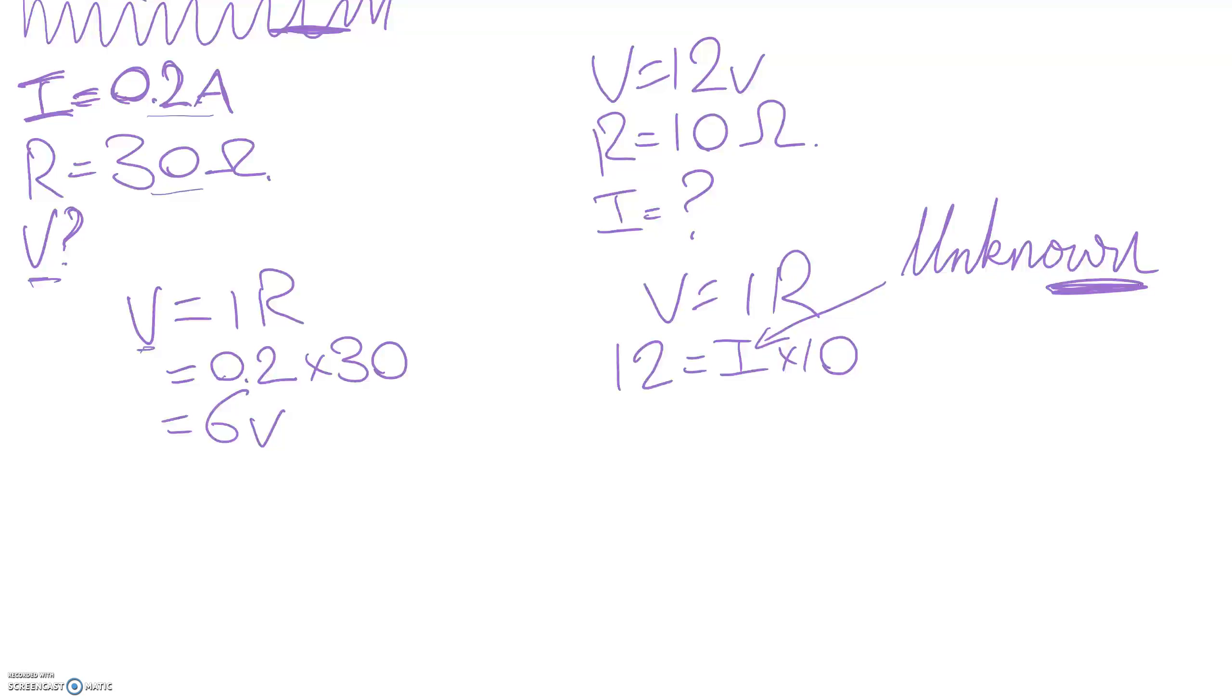So I'm going to divide both sides by 10. 10 times 10 divide by 10 cancel. I get 12 over 10 equals I. I equals 1.2. Don't forget the units. This is current so that's amps. So sometimes you'll have to rearrange like we did here. Sometimes you'll get lucky and you'll just be able to solve for V straight away.